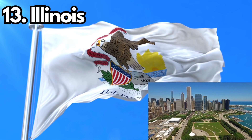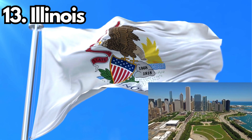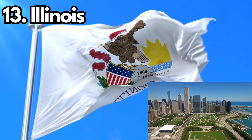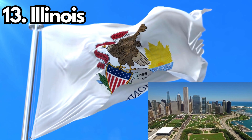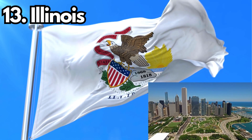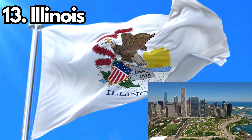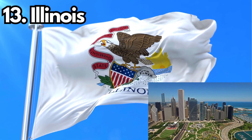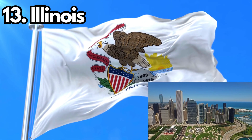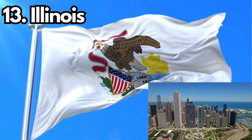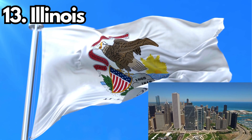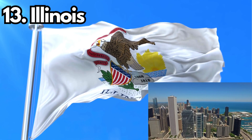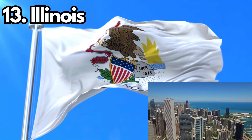13. Illinois. Design: The Illinois state flag features the state seal on a white field with the word Illinois below. Meaning: The state seal includes symbols of agriculture, transportation, and the state motto, 'State Sovereignty, National Union.' History: The current design was adopted in 1915.